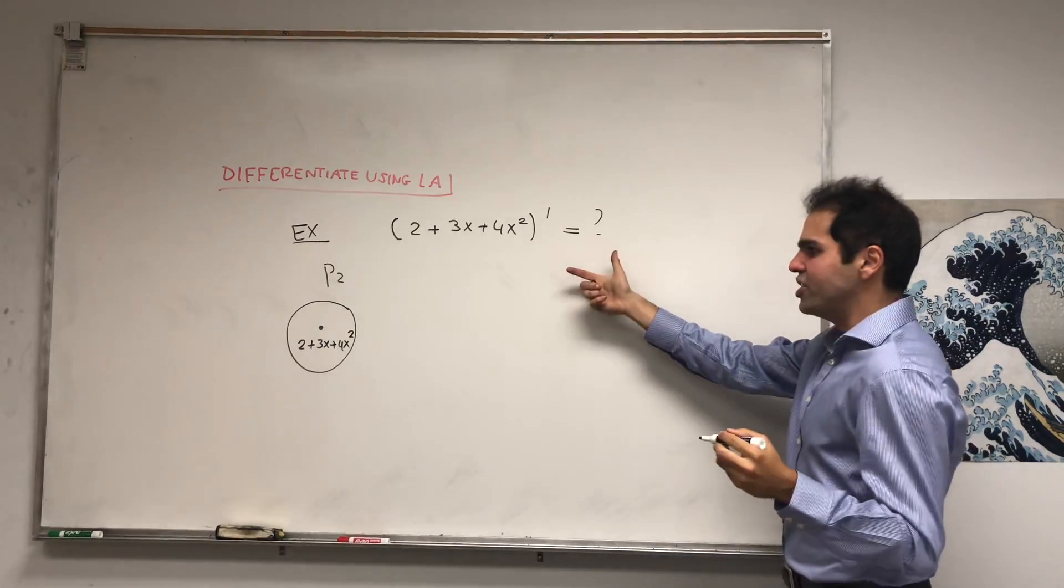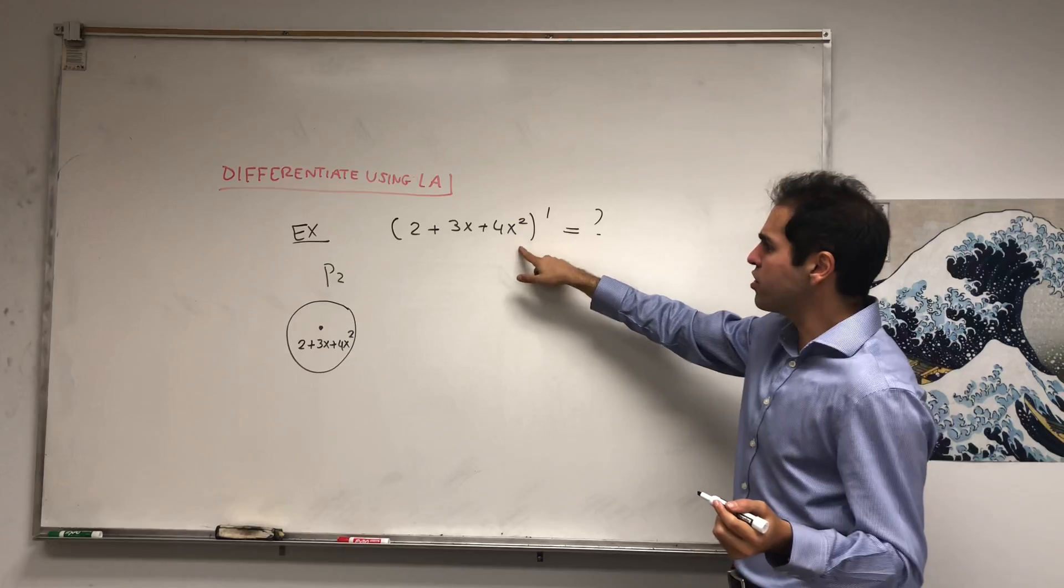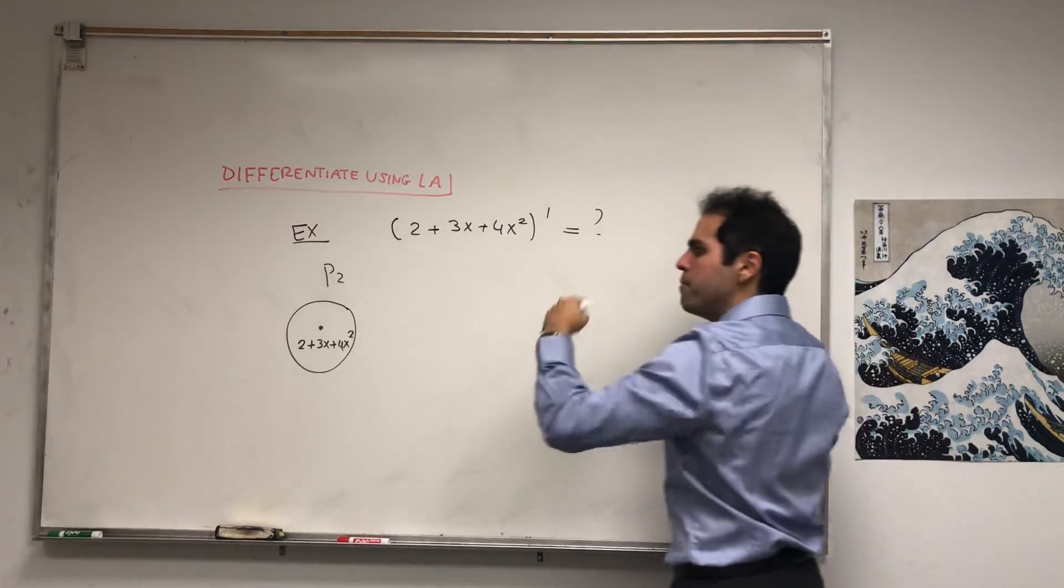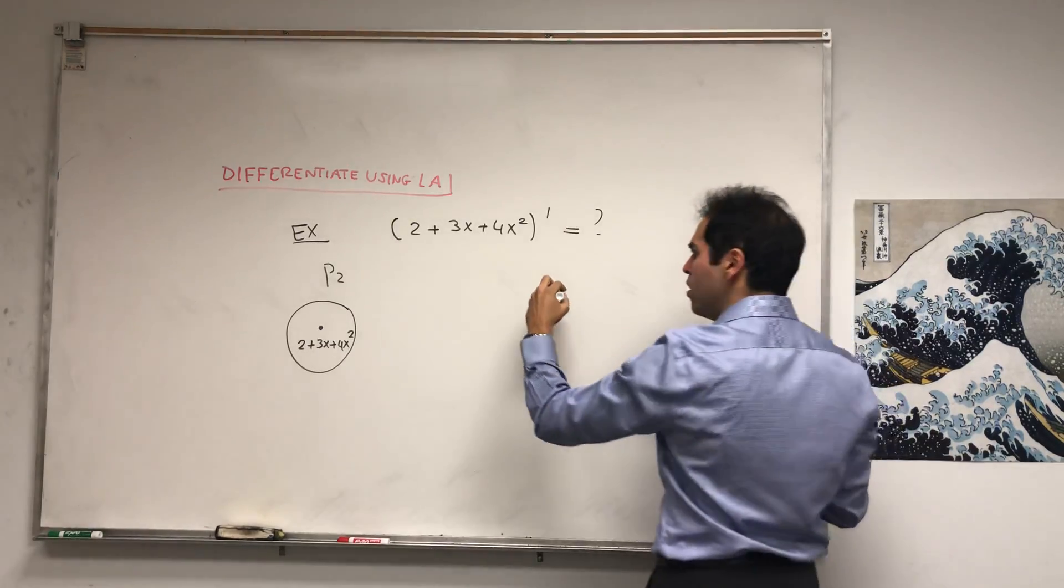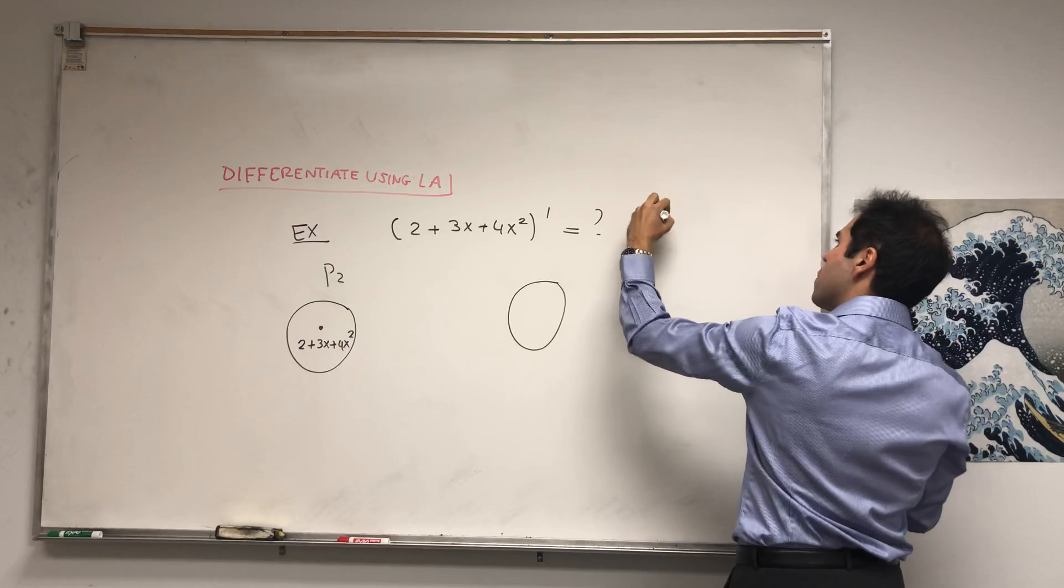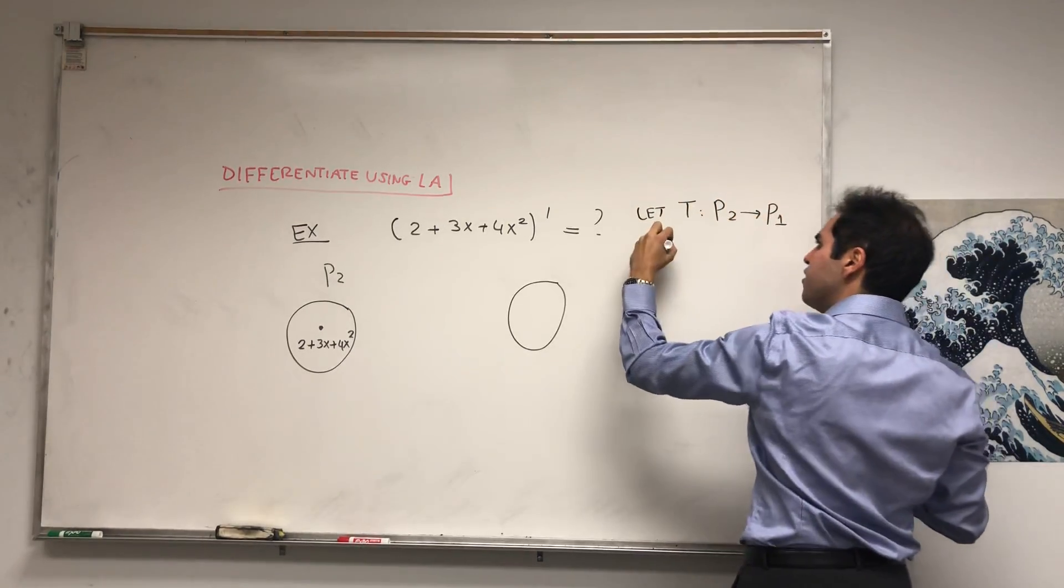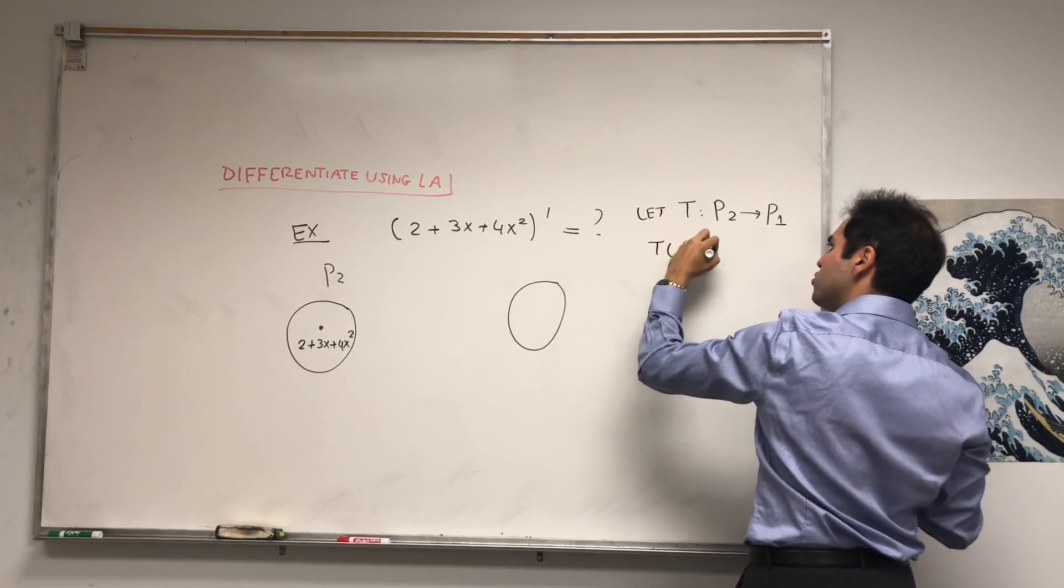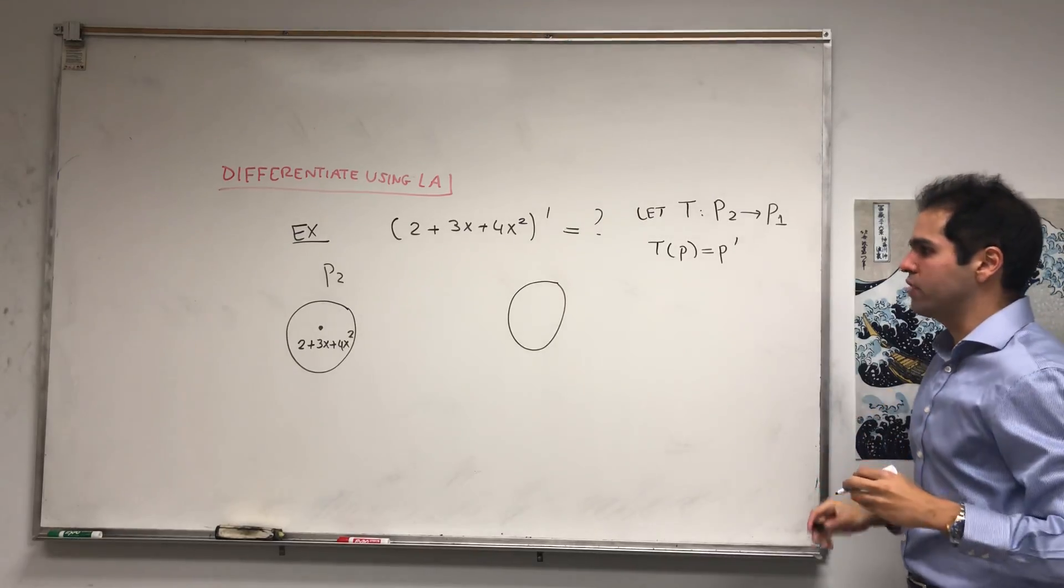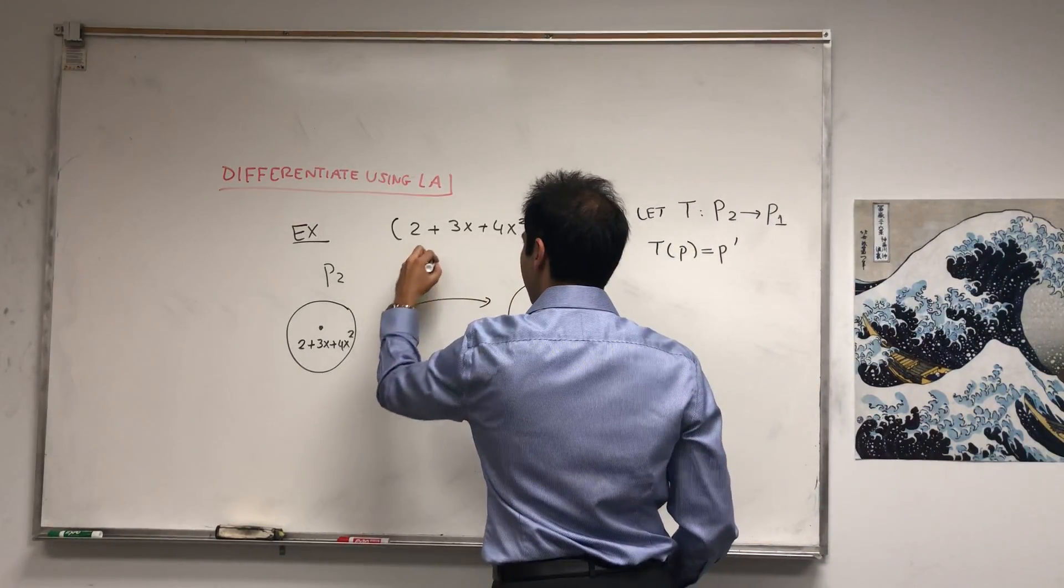And look, to differentiate this in linear algebra, what you would do, you would consider the linear transformation which takes this polynomial and maps it to a polynomial of degree less than or equal to 1. So let T go from P2 to P1, and T of P equals P prime. And this is, again, you can show it is a linear transformation. So this is P2, this is P1, and this is T.